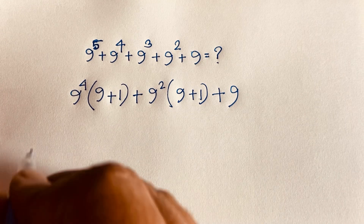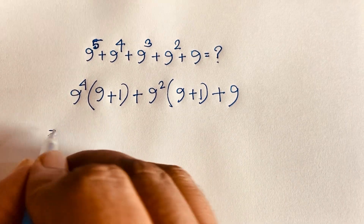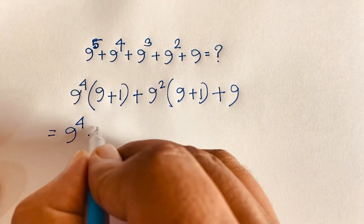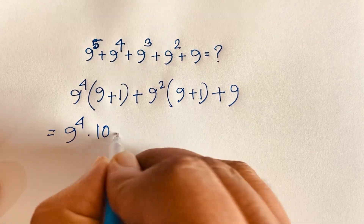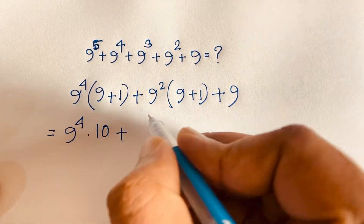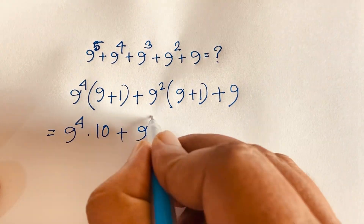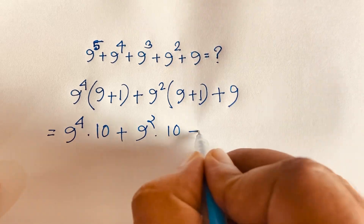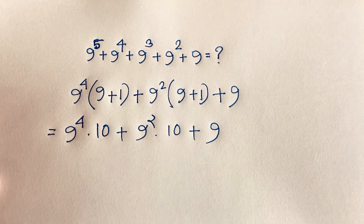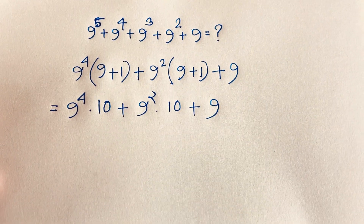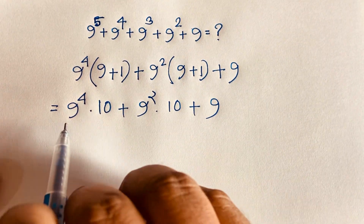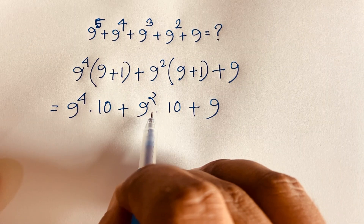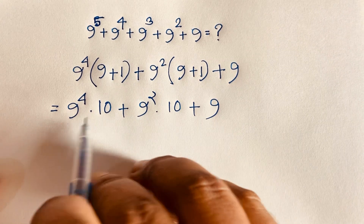Now you can see easily it will be 9 to the power 4 times 10, plus 9 to the power 2 times 10, plus 9. In this expression you can see there is 9 to the power 4 and 9 to the power 2.